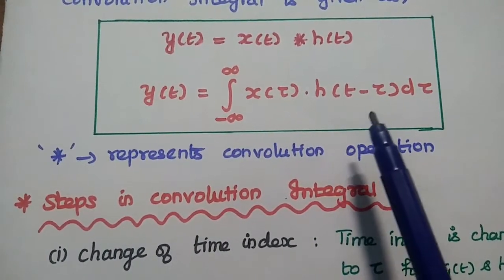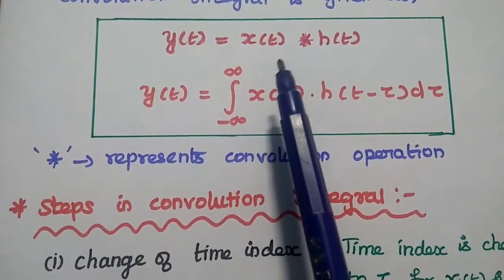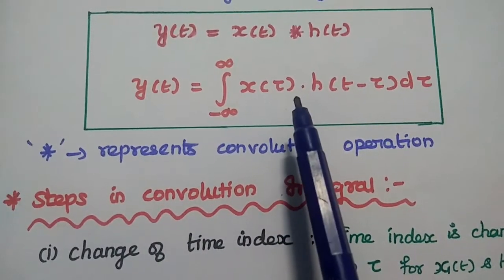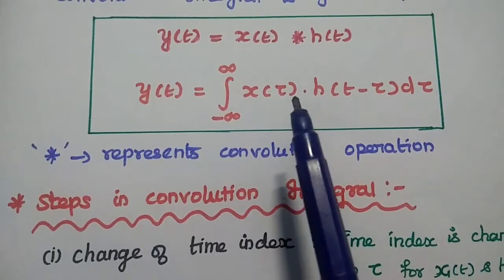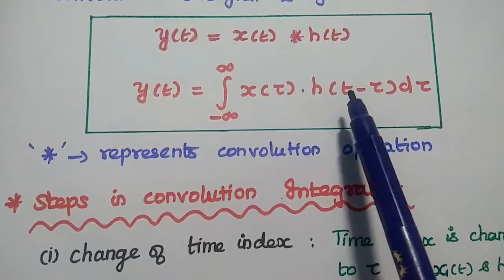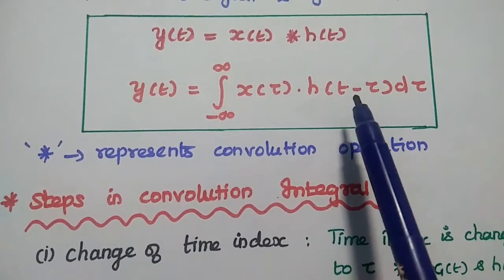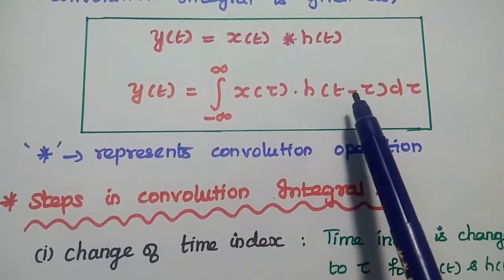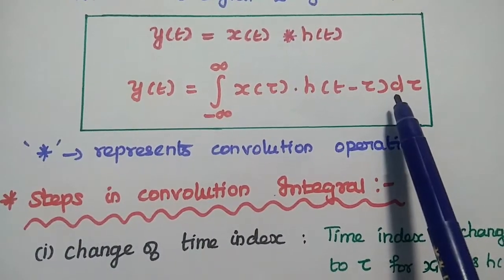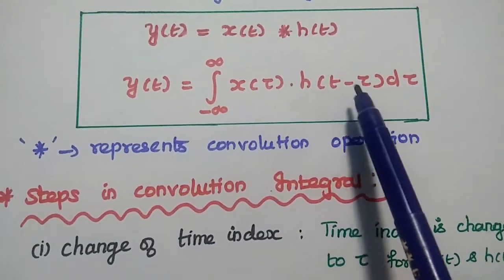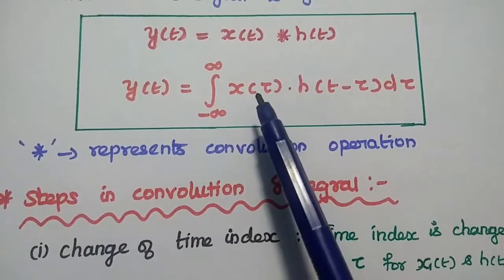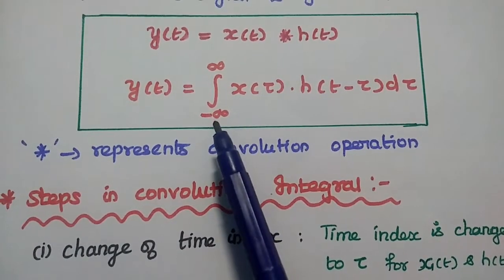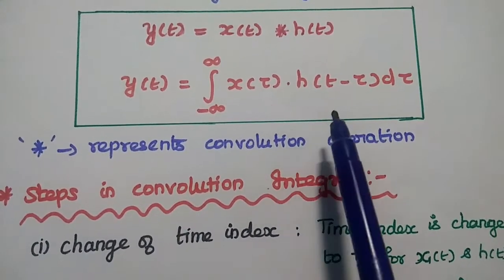There are five steps involved in this convolution integral operation. The given signals are in time t, but in the formula we have changed the time t to τ. That is the first step: change of time index — time t is changed to τ. The next step is folding the signal: H of τ is folded into H of minus τ. After folding, we shift the signal — that is H of t minus τ. Fourth step: multiply X of τ with H of t minus τ. Fifth step: integrate the multiplication of X of τ and H of t minus τ.